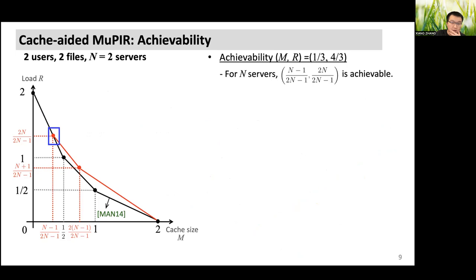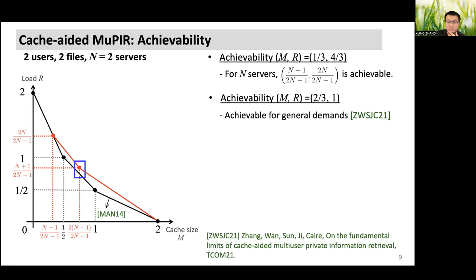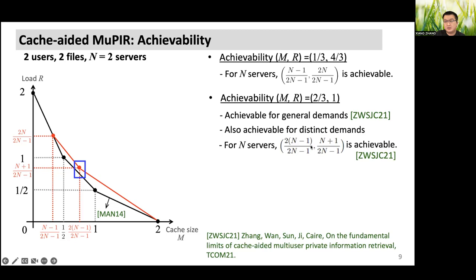This example is for two servers. For an arbitrary number of servers — specifically n servers — this memory-load pair is achievable. For the second corner point, where memory size is two-thirds and the load is one, this point is achievable for the multi-user PIR with general demands. Since the distinct demand case is strictly a subset of the general demand case, it is also achievable for our case with distinct demands, and this memory-load pair is achievable as shown in one of our previous works.